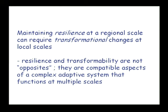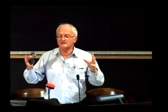We make the point that maintaining resilience of the system as a whole at a regional scale can require transformational changes at local scales. You have to think about that as the evolution of a system through time. Resilience and transformability are not opposites — they're compatible aspects of a complex adaptive system functioning at multiple scales. One of the fundamental errors being made as resilience becomes a buzzword is that resilience means no change. Resilience is about maintaining the change in order not to change — in order not to fundamentally go through a regime shift, you have to keep changing and probing the boundaries. The whole system evolves through time without going through phase shifts.